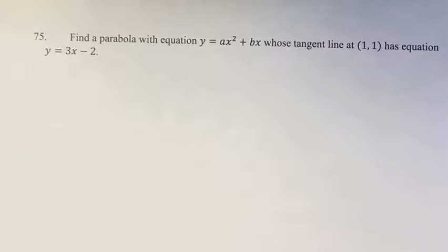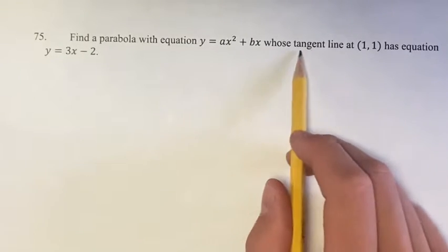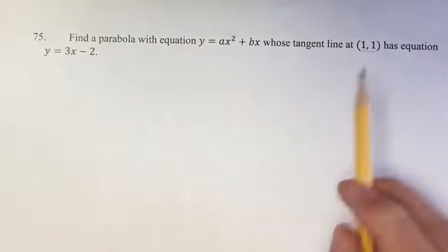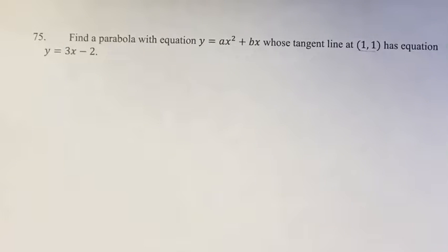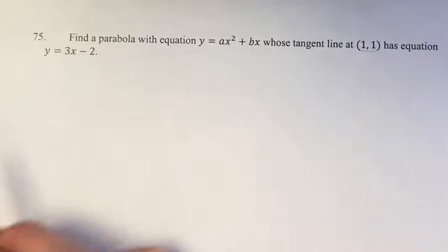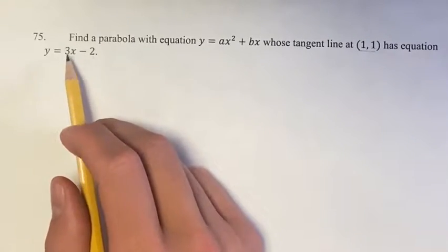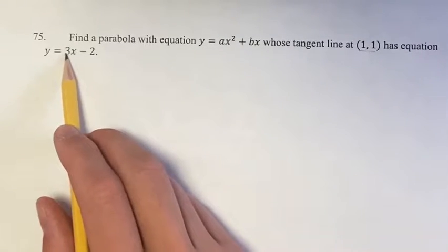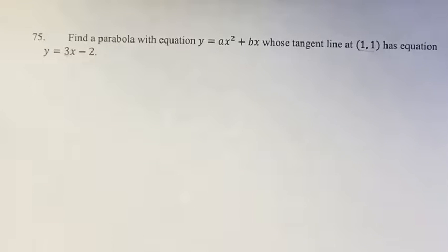So we're given two pieces of information here. One, if there's a tangent line at (1,1), that means that the point (1,1) is on the line. And two, if it has the equation y equals 3x minus 2, that means that the tangent line at this point has a slope of 3.